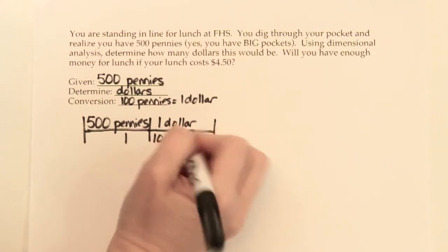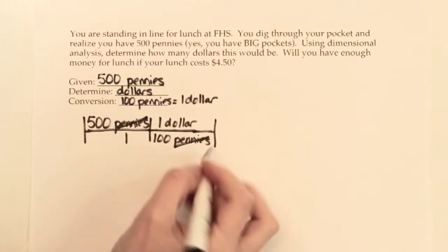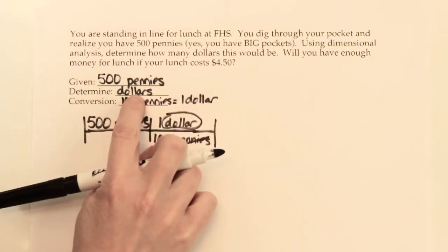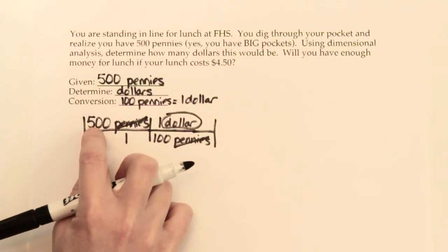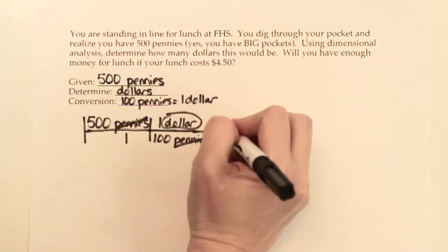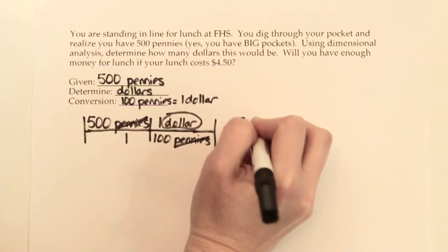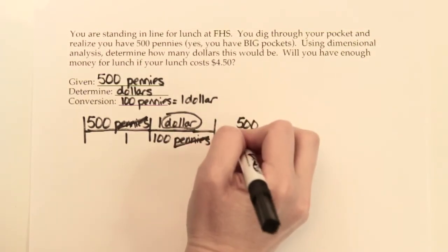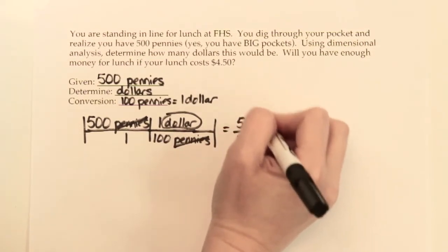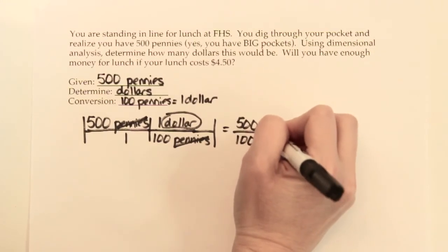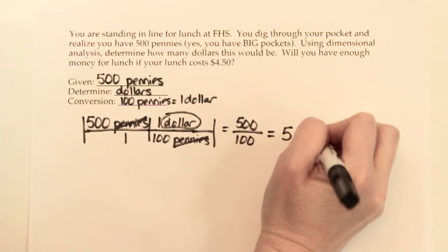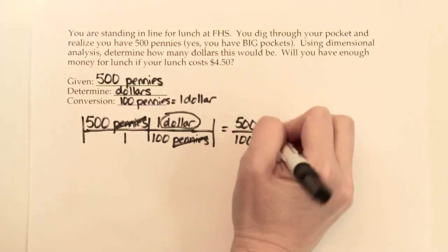That allows us to cancel out the word pennies and pennies. We're at dollars, which is where we were trying to go, so we know we've hit the end of the problem. Now we just multiply across on the top: 500 times 1 is 500. Multiply across on the bottom: 1 times 100 is 100. And now we simplify — 500 divided by 100 is 5, and our unit would be dollars because our pennies have canceled out and gone away.